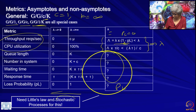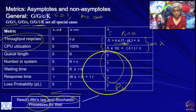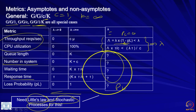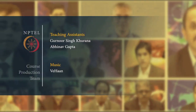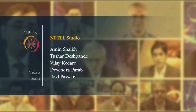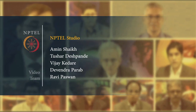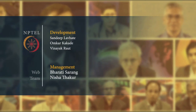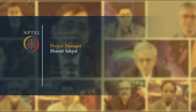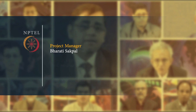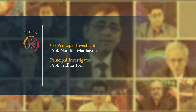To find all these intermediate values, we actually need a more advanced theory called stochastic processes. Luckily, there is a simpler law called Little's Law, which helps us find the number in system given the response time, or vice versa, and similarly relate queue length to waiting time. This is what we are going to do in the next class. Thank you.